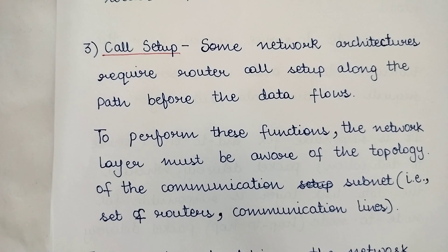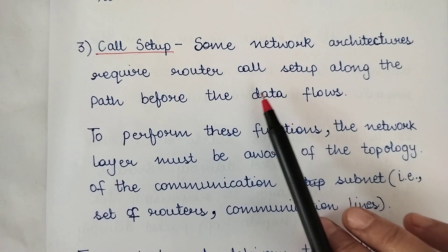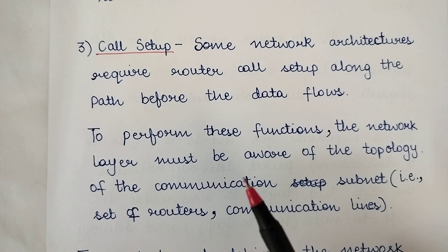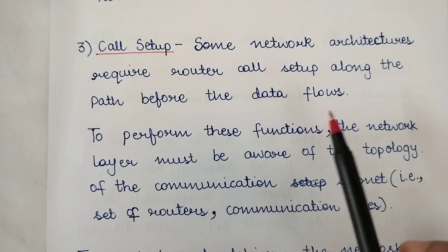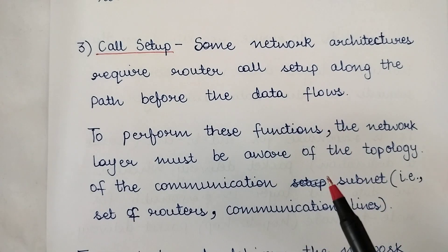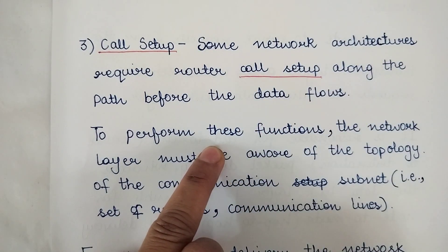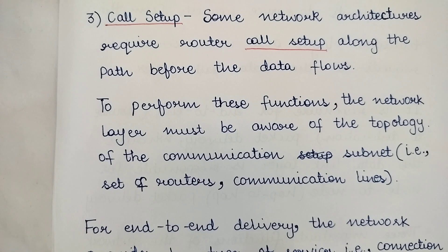The third function is call setup. Some network architectures require routers to set up a call along the path before data flows. There are data transfers in which a dedicated path is not required, but in some network architectures a dedicated path or call setup is required. For such architectures, the network layer provides the facility of call setup before data can be transmitted.